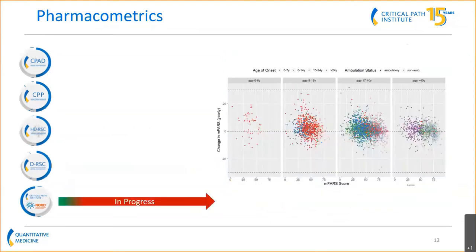We're also getting into rare diseases through our Rare Disease Cures Accelerator initiative. One disease area we're looking at is Friedreich's ataxia. In the early stages, we're getting a sense of what the data looks like — one of those MIDD buckets — to inform which models we're going to select and what tools we're going to build.